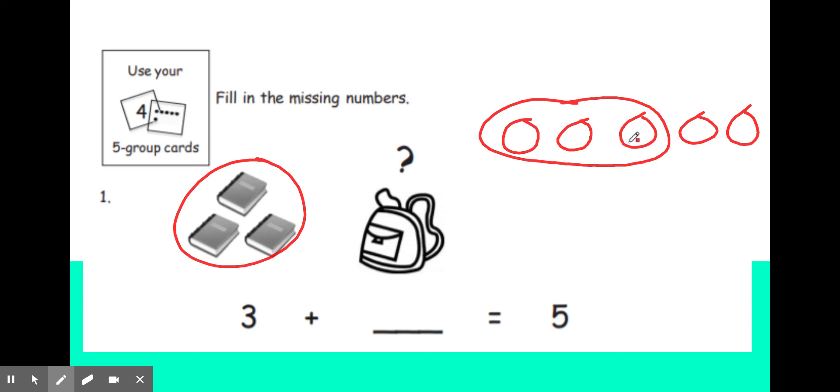How many more does three need to make five? We have three, and then we have one, two. So that means our answer is two. Three plus two equals five. Great job. You can do this.